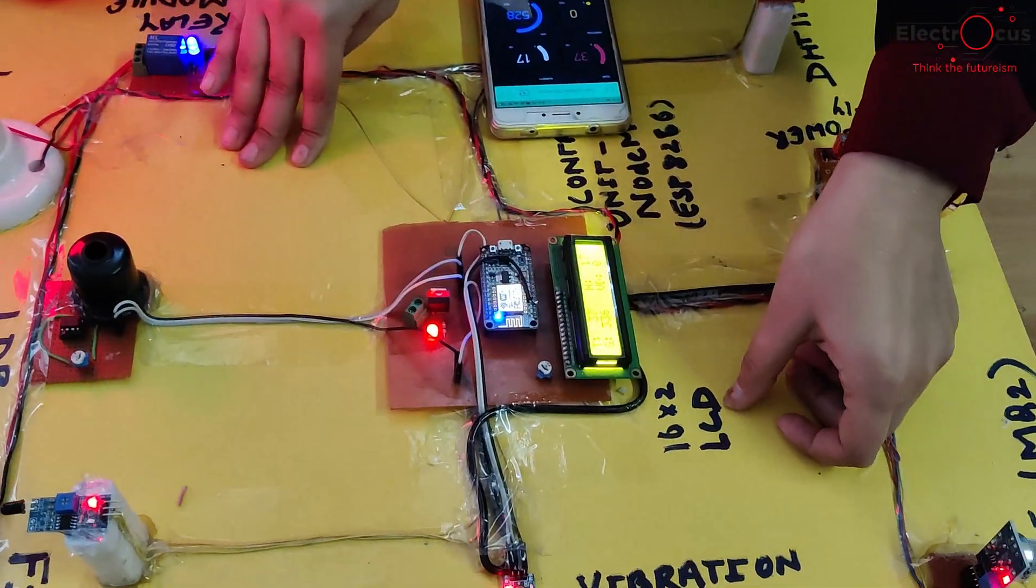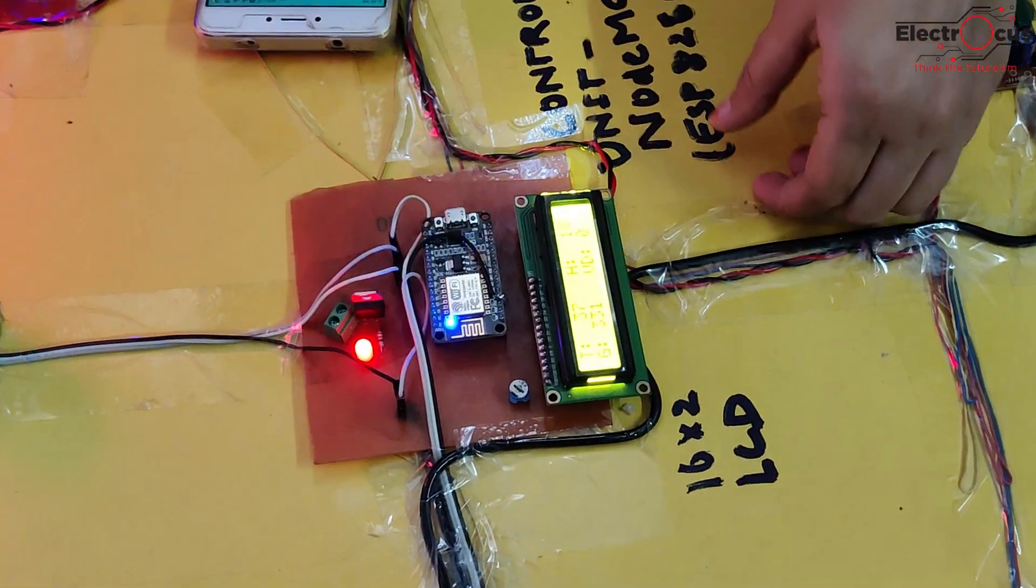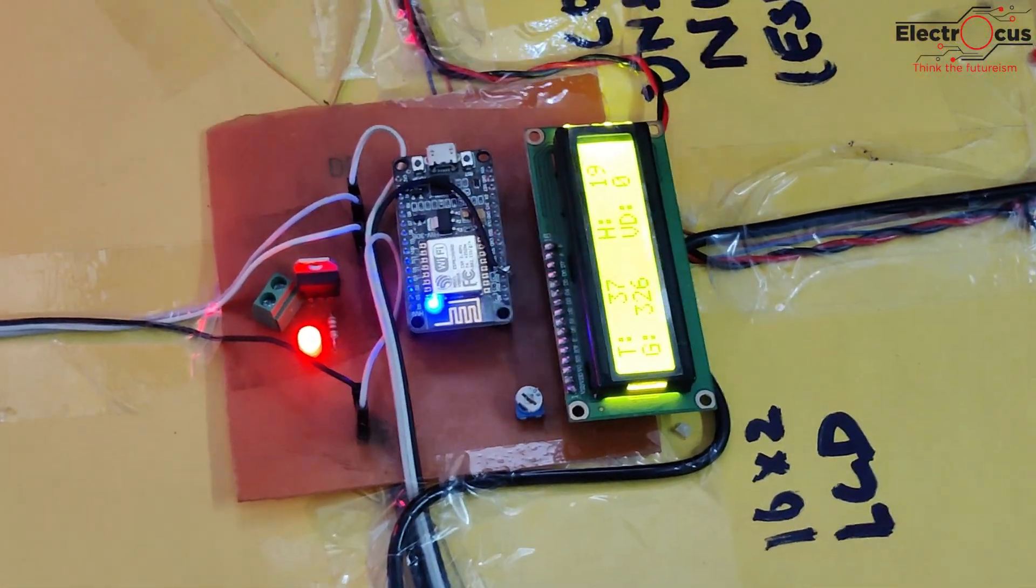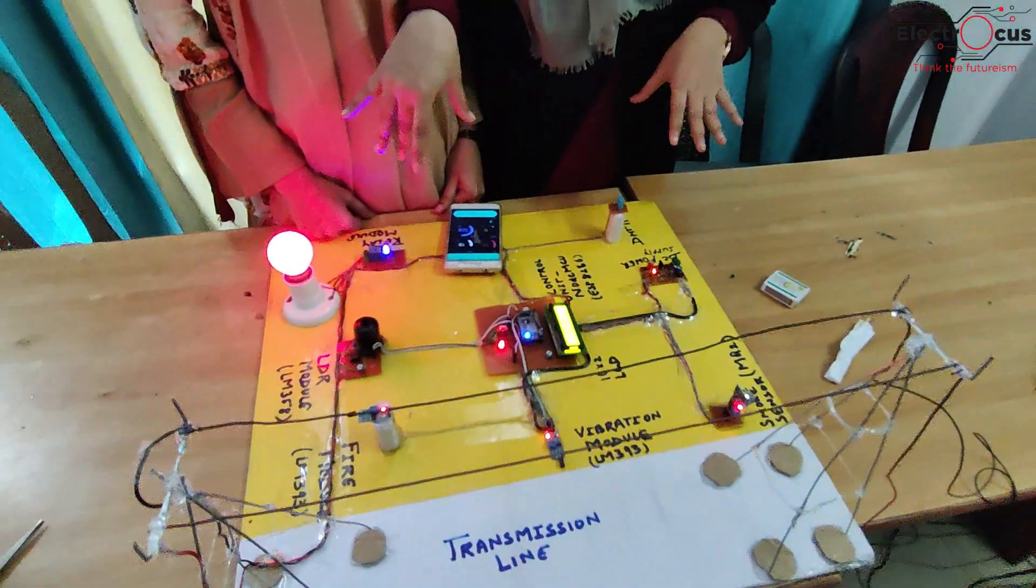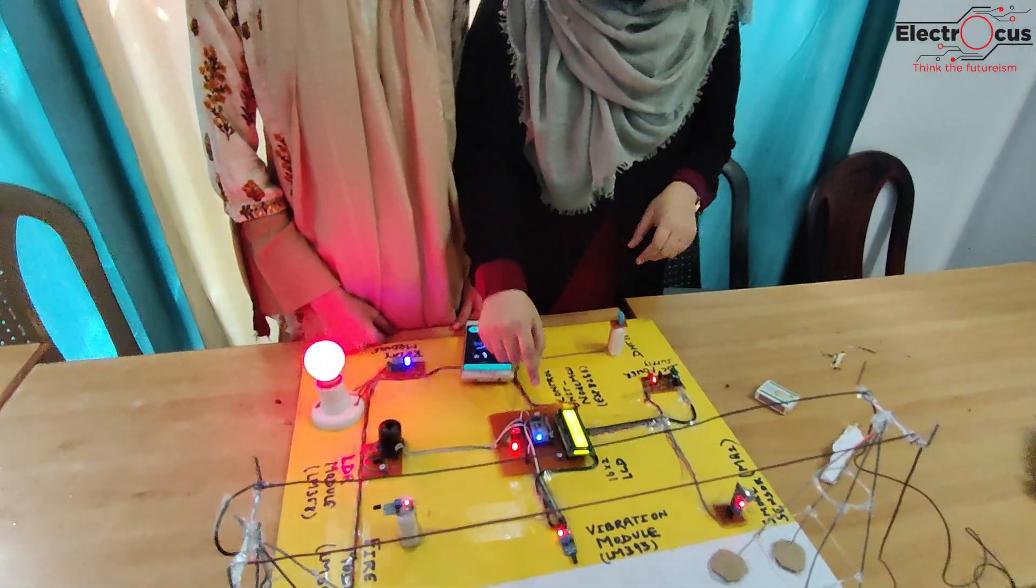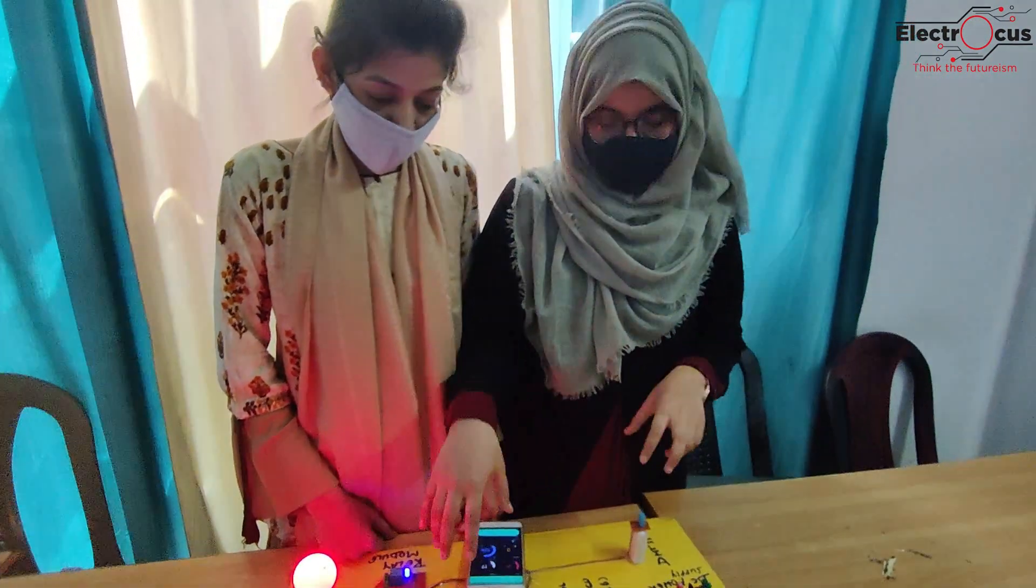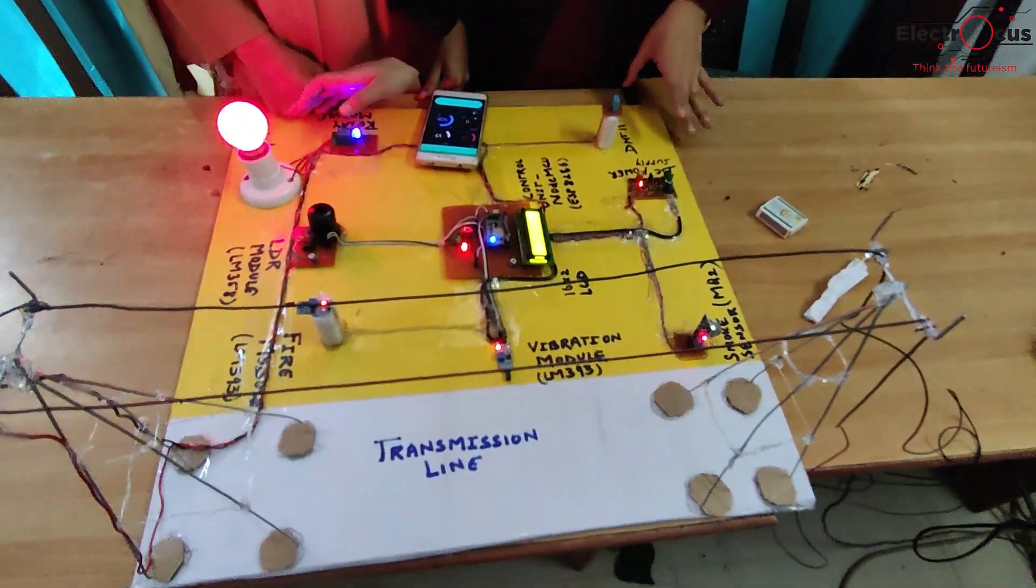This is the 16x2 LCD display. This is our control unit, the Node MCU. Node MCU is equipped with ESP8266 for communication purpose. This Node MCU is connected to the local WiFi network.